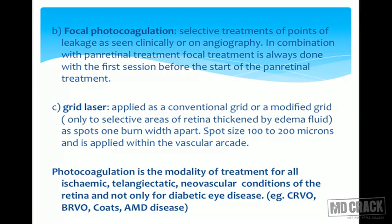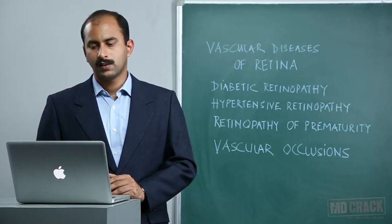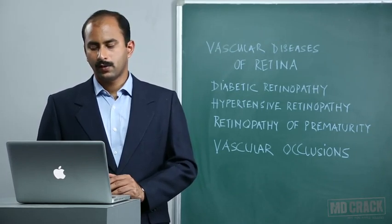Focal photocoagulation is used for selective treatment of leakage points as seen clinically or on angiography. When combined with panretinal treatment, focal treatment is always done first, as aggressive PRP can worsen macular edema. Grid laser is a pattern applied to the macula when leakage is ill-defined and diffuse, used when leakage points cannot be individually identified on angiography. The spot size changes to 100 to 200 microns, decreasing toward the fovea, applied within the vascular arcade. Photocoagulation is the treatment modality for all ischemic, telangiectatic, and neovascular conditions of the retina.